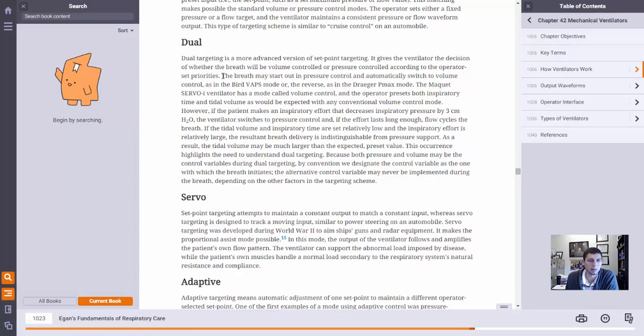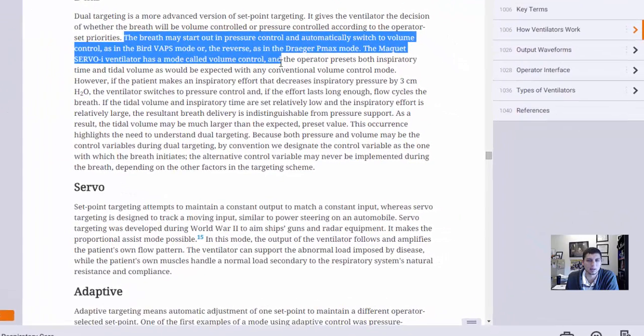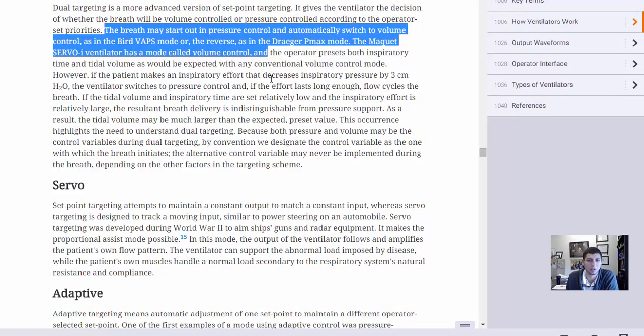I'm going to drag my cursor across a section I would like to highlight. I let go of the highlight and I don't get the pop-up box asking me what color I'd like to highlight it.